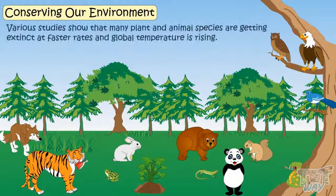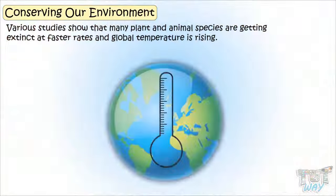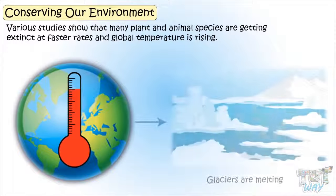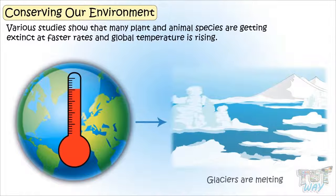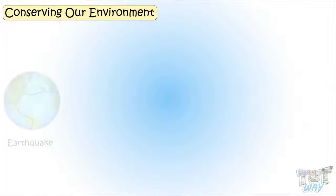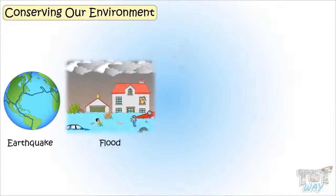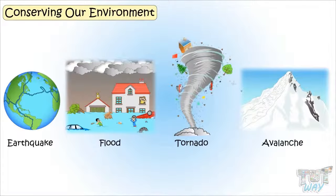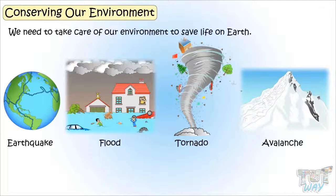Various studies show that many plant and animal species are getting extinct at faster rates. Global temperature is rising, glaciers are melting, and extreme climatic events like earthquakes, floods, tornadoes, and avalanches are increasing day by day. So we need to take care of our environment to save life on Earth.